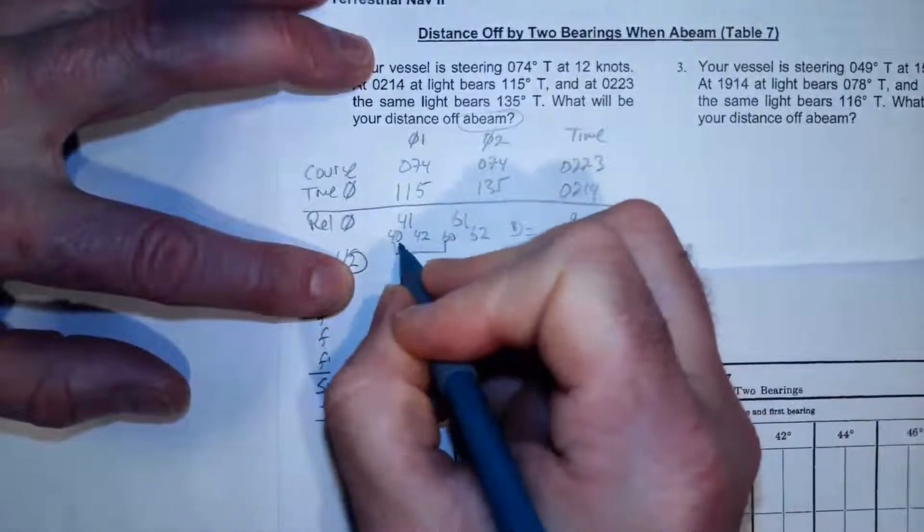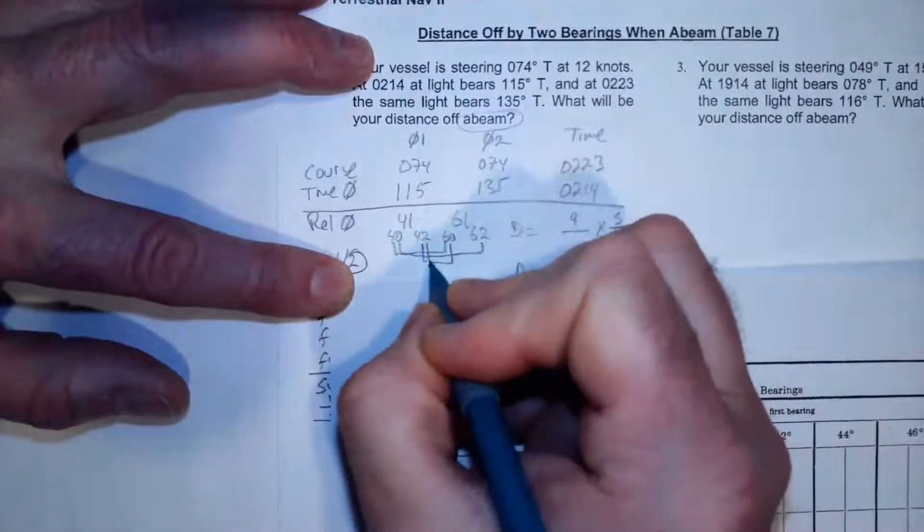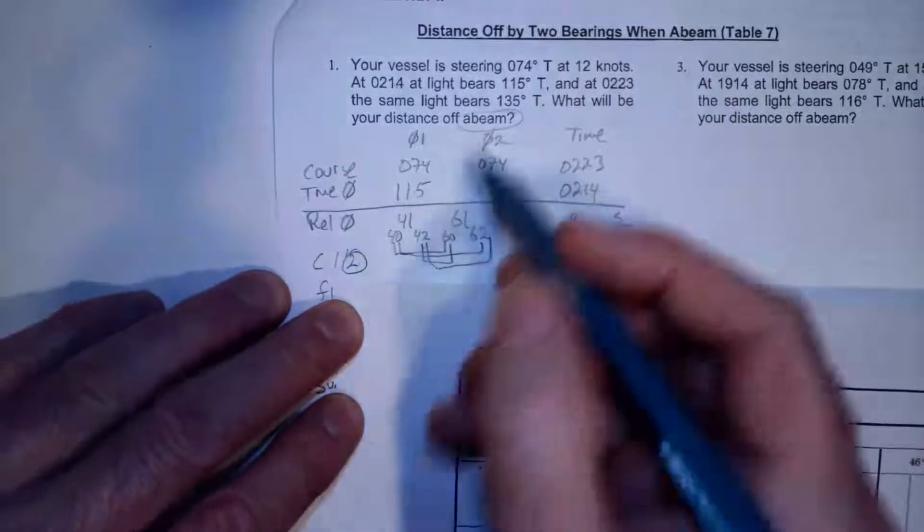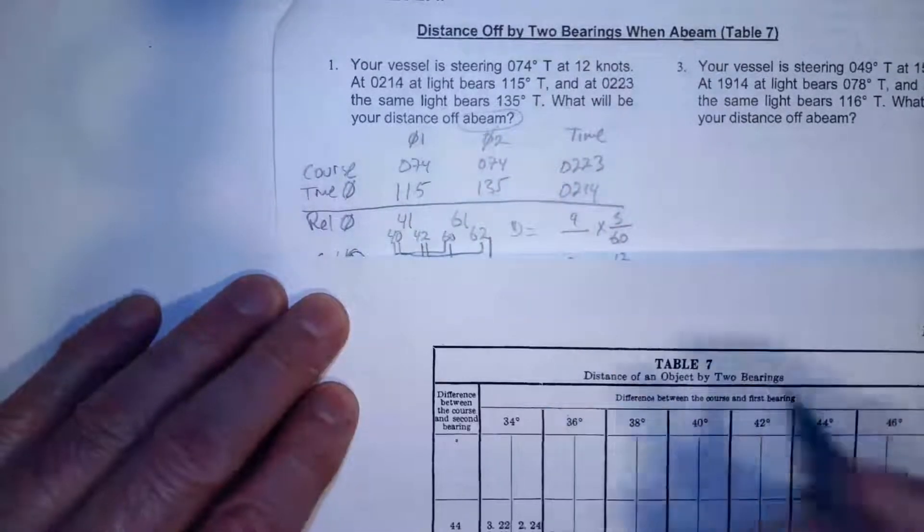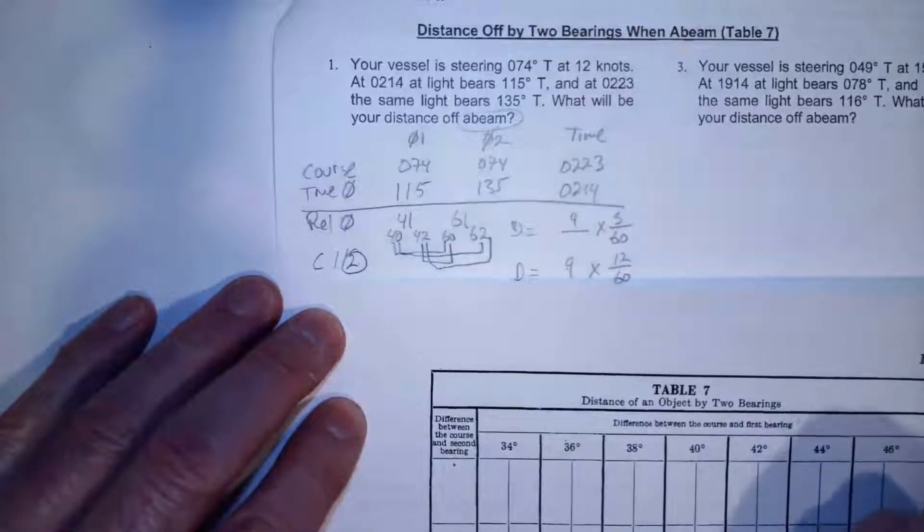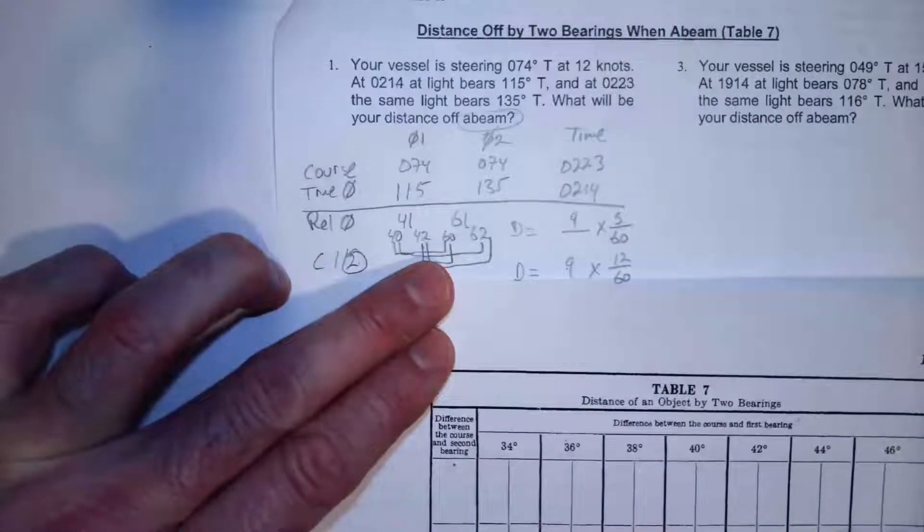So what I need is I'm going to bracket this 41, that's going to be 40 and 42, and this is going to be 60 and 62. And I'm going to go 40, 60, 40, 62. Then I'm going to go 42, 60, 42, 62. And I got to do all these in the second column because it's abeam. So here we go. So I'm going to go to 40. Here's column 40 and I got it.